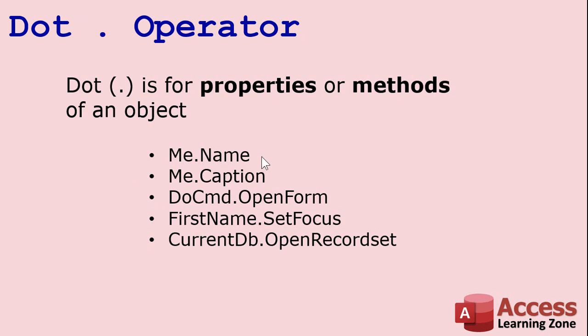For example, me.Name is the Name property of the current form — like "CustomerF". me.Caption is the Caption property that appears in the title bar. Properties describe something about an object, like its name, caption, or width. Methods are actions — DoCmd.OpenForm is a method, as are Close, GoToControl, and GoToRecord.